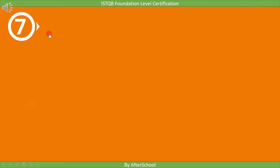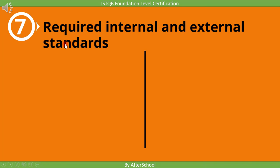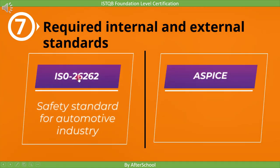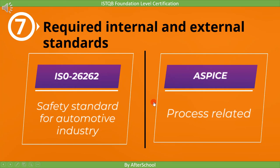The last context is required internal and external standards. As mentioned before, ISO 26262 is a safety standard for the automotive industry. It is an external standard which organizations must follow if they work in the automotive industry, and it needs to be included in the test process. ASPICE is another standard related to process. If an organization needs to comply with the ASPICE standard, they have to adopt their process in accordance with ASPICE.